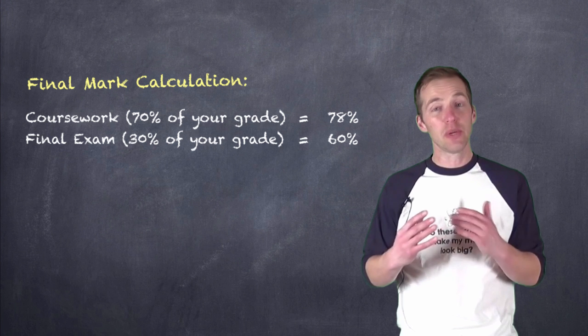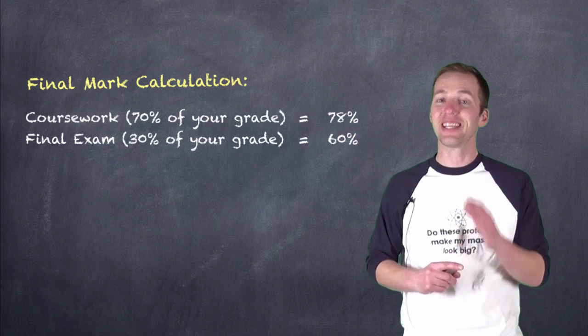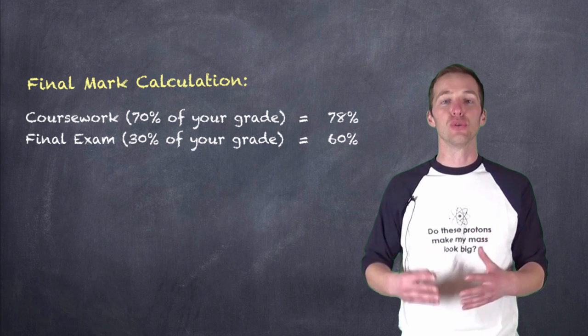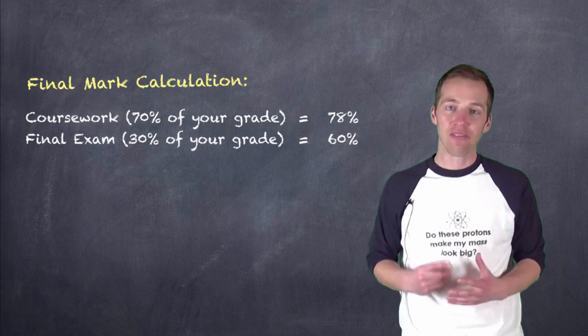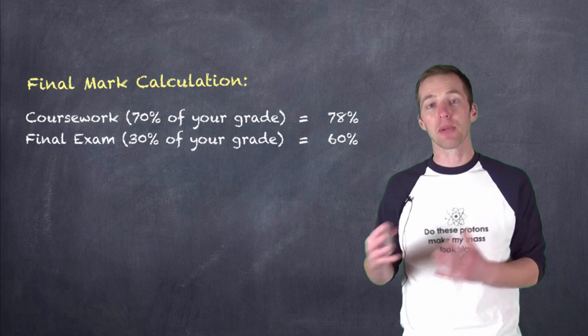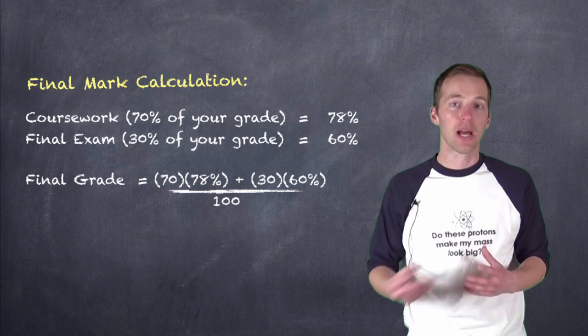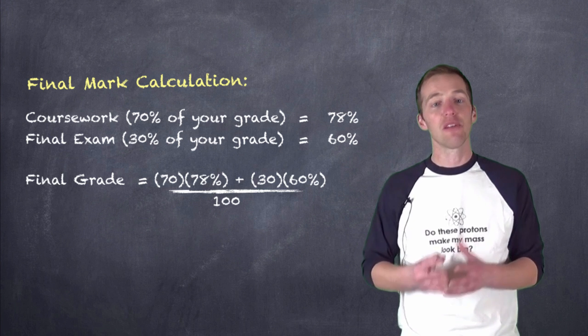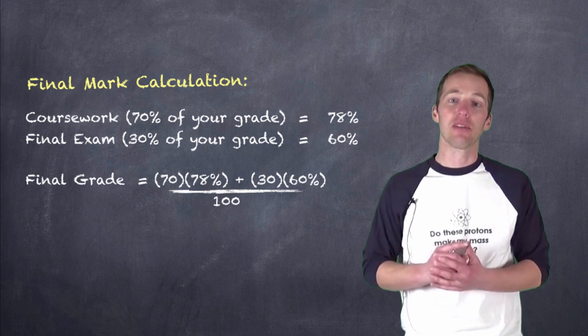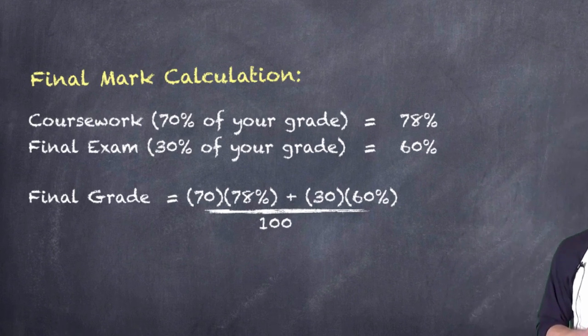Now, if they were weighted equally, we could just add up those percentages. Add 78 and add 60 and divide by 2. But these are weighted percentages, so we can't do that. Now, the way that we go about calculating this is to use a weighted average method of calculating. So what we're going to do is we're going to take the mark of 70, we're going to multiply it by the 78. We are going to add that to the mark of 60, multiply it by the 30%. And, of course, because all of these values are percentages and they're represented out of 100, we are going to divide the entire thing by 100 and represent it as a percentage.